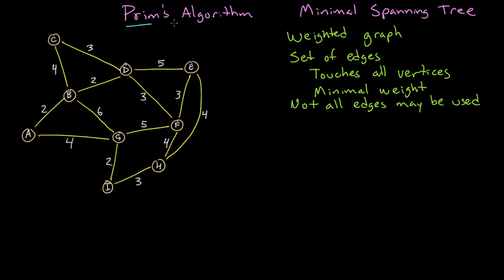We're going to be using Prim's algorithm to find a minimal spanning tree of this graph. Prim's algorithm works on a weighted graph, and we know this is a weighted graph because there are numbers associated with each one of these edges. These numbers might reflect the cost to go from vertex D to vertex E, or perhaps the distance or some other numeric value.